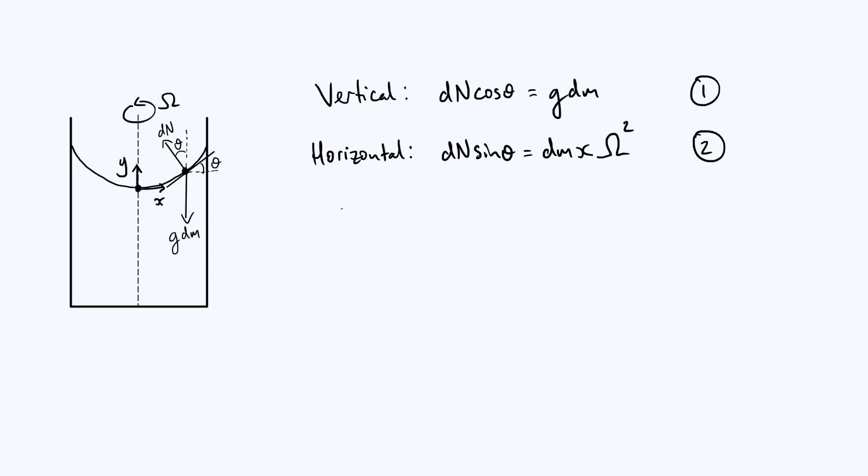Now notice that conveniently, if we divide equation two by equation one, then the dm's will cancel and the dn's will also cancel. This is a good thing because these are both quantities that we just introduced as part of our working, so we don't really want our final answer to depend on those. So if we divide them, you get sin theta over cos theta, which is tan theta, and the right hand side will then just be x omega squared divided by g.